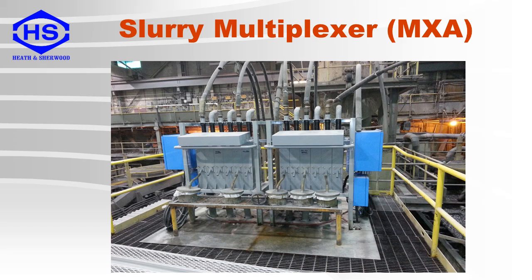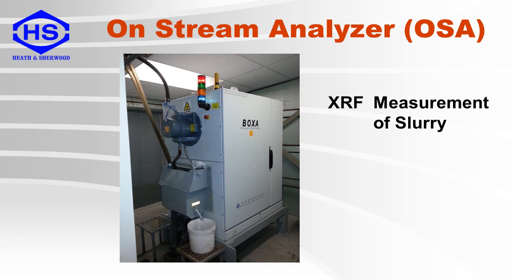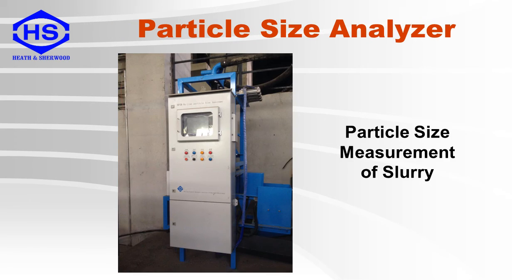Here you can see two multiplexers — in this case there are a total of six process lines connected, with a few spares also available for use. This is an example of an on-stream analyzer system where the flow cell is where the measurement takes place, using the X-ray fluorescence principle. The sample flow from a sampling system can also be directed to other types of analyzers, such as a particle size instrument.